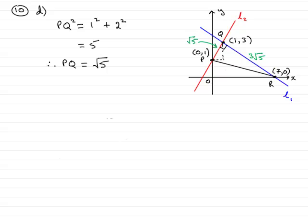So when it comes to working out the area of the triangle, area of triangle PQR, it's going to be equal then the base, 3 root 5.